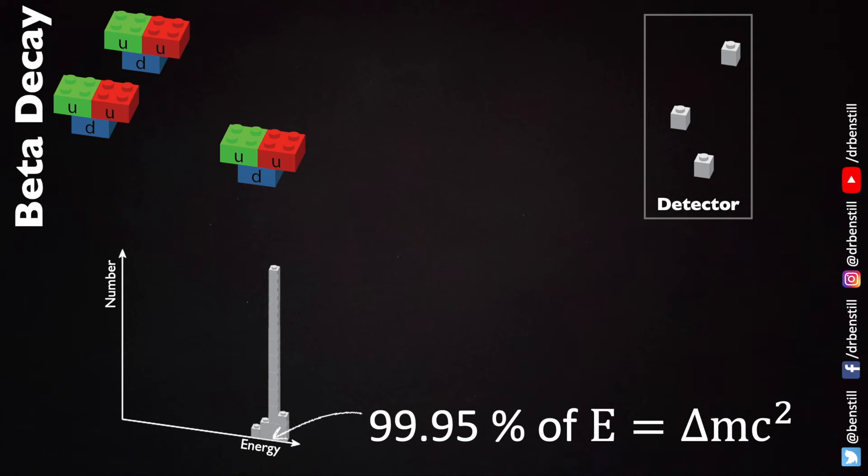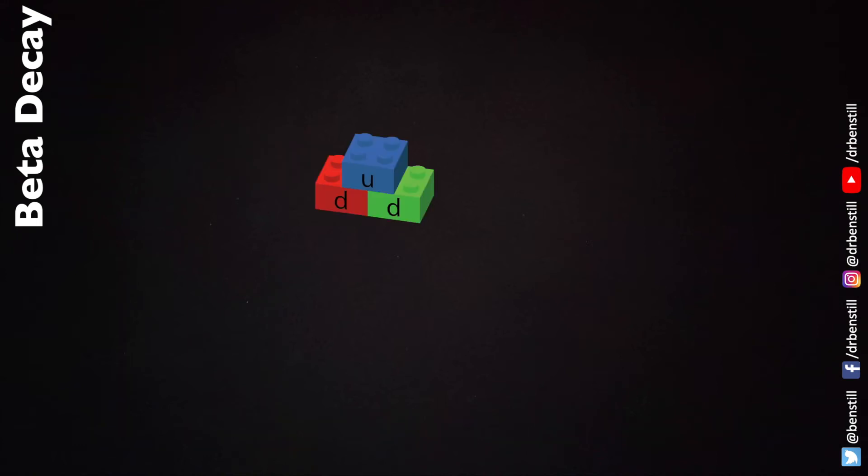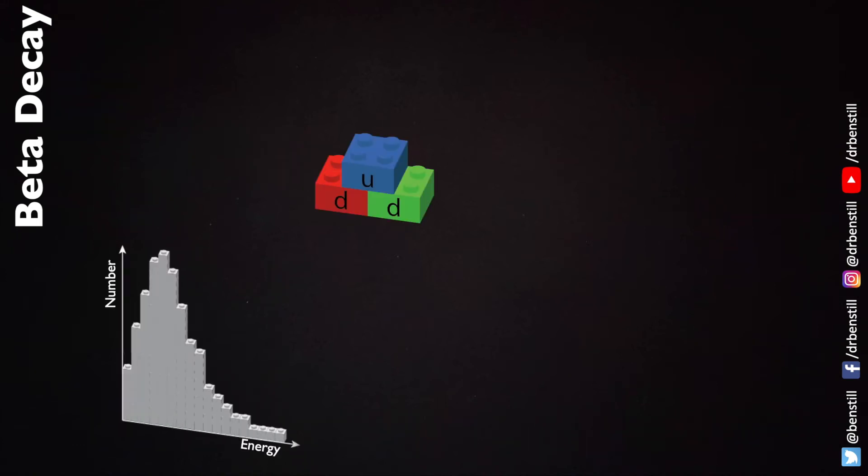But actually that was found to be incorrect. What was actually seen was that as a neutron turned into a proton and electron, the energy of the electrons took a wide variety of different energies.